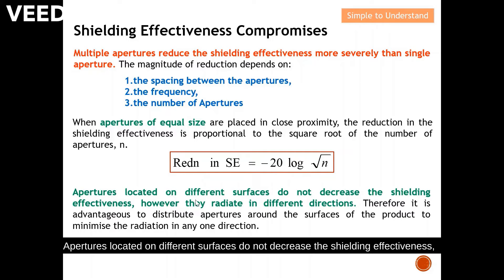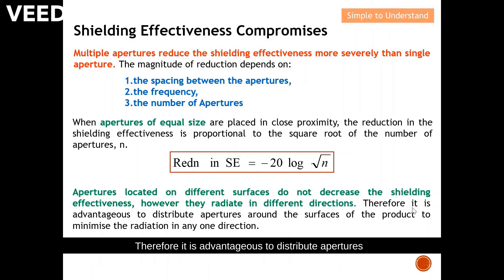Apertures located on different surfaces do not decrease the shielding effectiveness; however, they radiate in different directions. Therefore, it is advantageous to distribute apertures around the surface of the product to minimize radiation in any one direction.